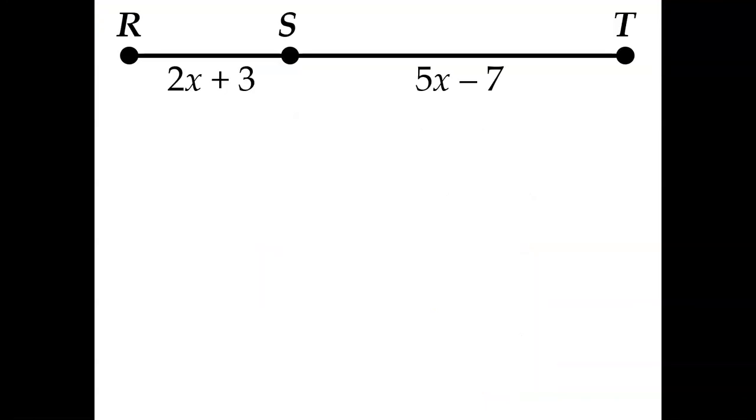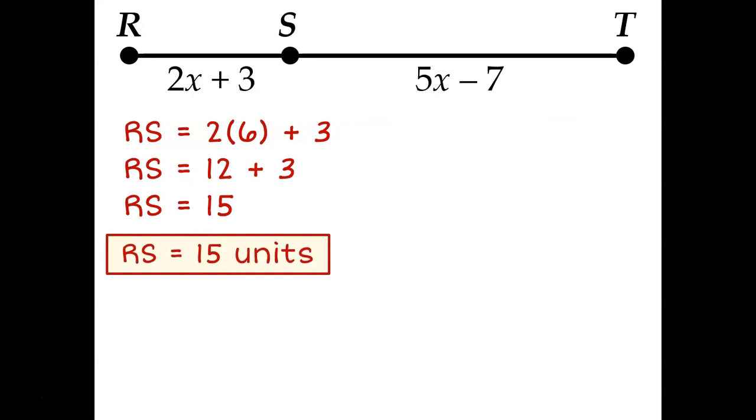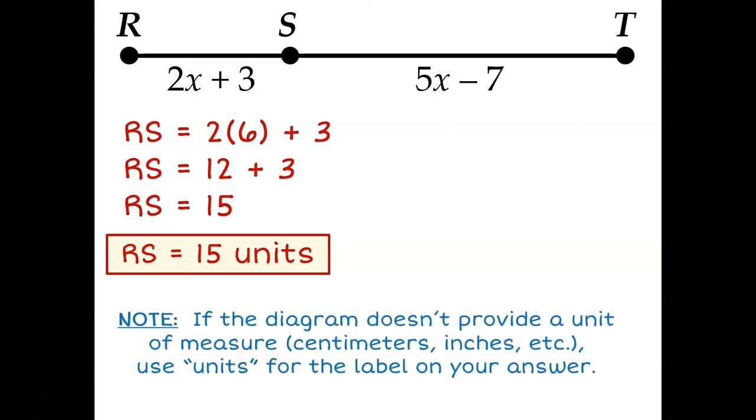RS is 2X plus 3, and we just figured out that X was 6. So instead of saying that RS is 2X plus 3, I can say that RS is 2 times 6 plus 3. 2 times 6 is 12, and 12 plus 3 is 15. So RS has to be 15 units. Now you'll notice I used units instead of inches or yards or centimeters, because we weren't told what units we were supposed to be working in. Anytime you have a situation like this, units is what you're going to label your answer with.